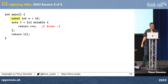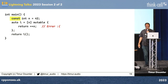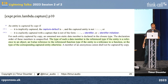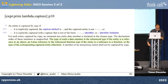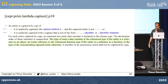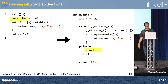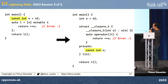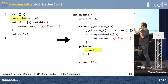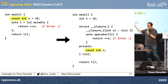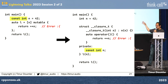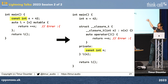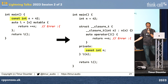So why does this not work? Looking again at the standard, it says the type of such a data member is the reference type of the entity, or the type of the corresponding captured entity otherwise. If you capture a variable by value, even though you're copying it, it's still going to use the same type — so the member is going to be const int. Obviously you can't mutate a const member in the call operator, even if the call operator is not const.